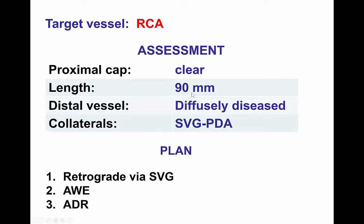The RCA CTO had a clear proximal cap, had a long occlusion length — essentially from the mid-RCA all the way to the PDA — had a diffusely diseased distal vessel, and had a patent vein graft to the posterior descending artery.